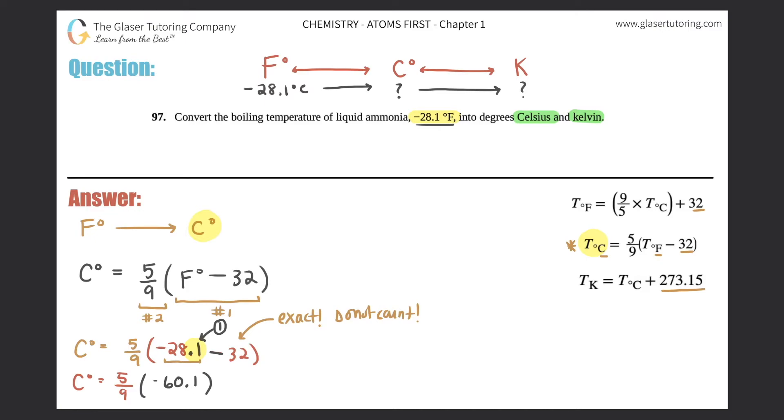So now I take this and multiply it by 5/9. So Celsius would equal -60.1 × 5 ÷ 9, and you get -33.38.